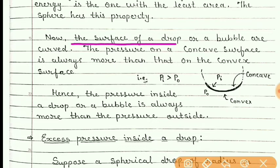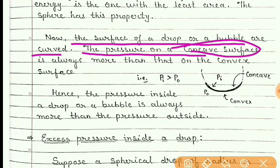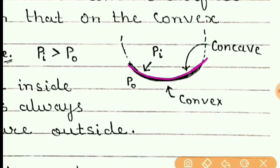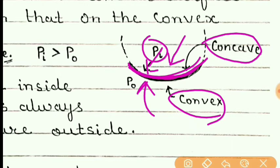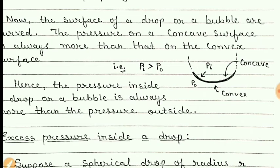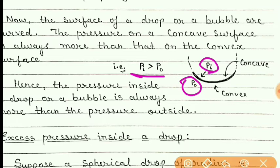The surfaces of a drop or a bubble are curved. For any curved surface, the pressure on the concave side (inside) will be more and the pressure on the convex side (outside) will be less. So if Pi is the pressure inside and Po is the pressure outside, then Pi is greater than Po.